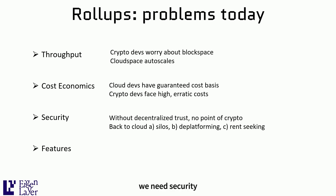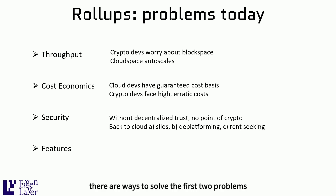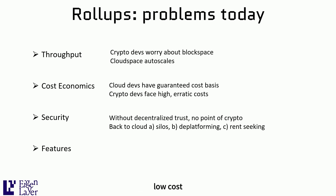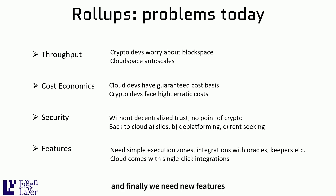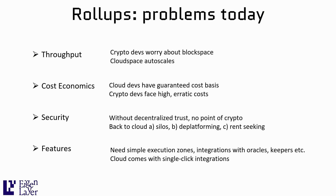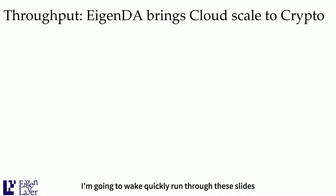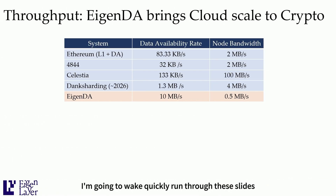We need security. There are ways to solve the first two problems — get high throughput and low cost — while giving up on security, but that's no good. And finally, we need new features; we need to build new VMs and many more integrations. How do you solve all of these problems with EigenDA? I'm going to quickly run through these slides.